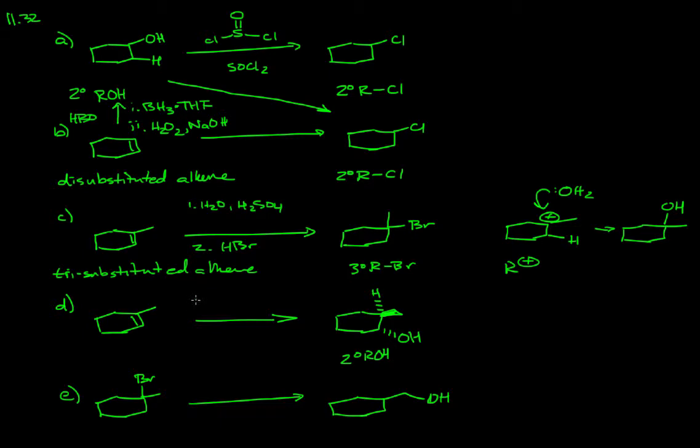The conditions to affect this transformation are going to be hydroboration oxidation. Treatment with borane, then the second step hydrogen peroxide sodium hydroxide. In the first initial part of this, the hydrogen's adding to the most substituted carbon. The least substituted carbon here gets the boron, the most substituted carbon gets the hydrogen.